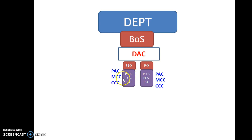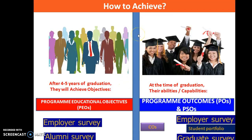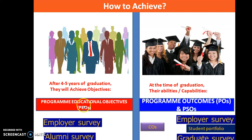To achieve the POs, we first define the department vision and mission, then the PEO statements. The PEOs are generally assessed by conducting surveys. Two important surveys are the employer survey and the alumni survey. By conducting these surveys, we verify whether our PEOs are achieved or not — typically four to five years after graduation.